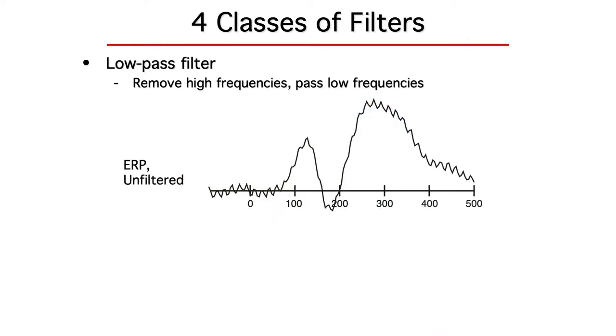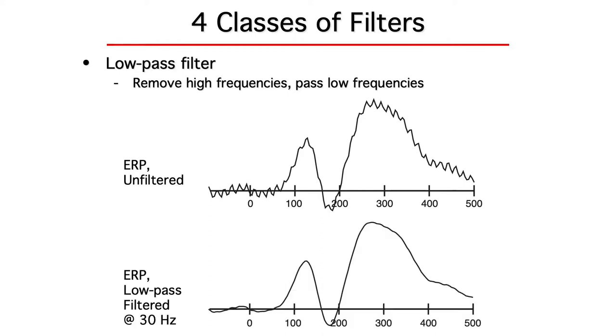Here's an ERP waveform that's contaminated with 60 Hz noise from the electrical devices in the recording environment. And here's the same waveform after we've filtered out everything above about 30 Hz. You can see that the waveform is basically the same, but the high-frequency ripples are now gone.